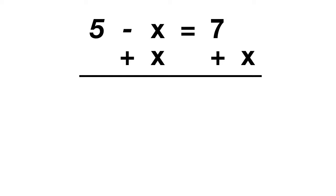Because when we solve that, minus x and plus x cancel out. We're left with just the 5. On the other side of the equation, now we have 7 plus x. Do you notice what happened? Now we have a positive x. Now we have what we're trying to solve for.